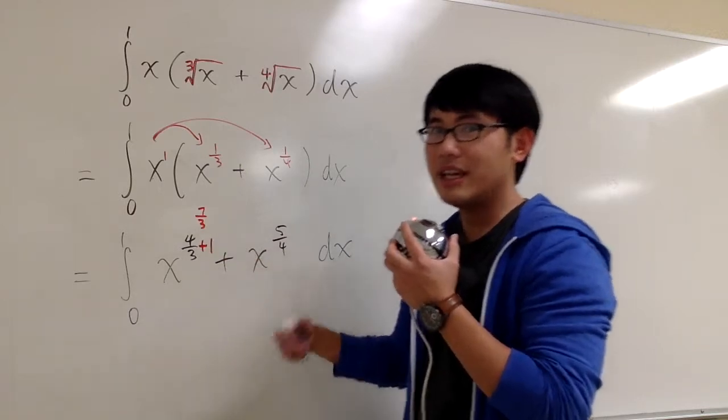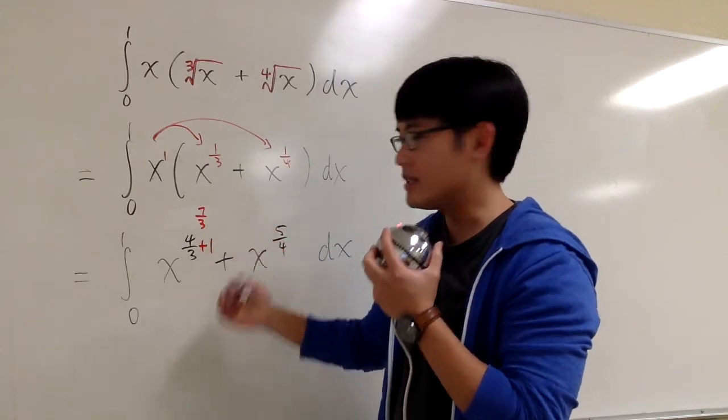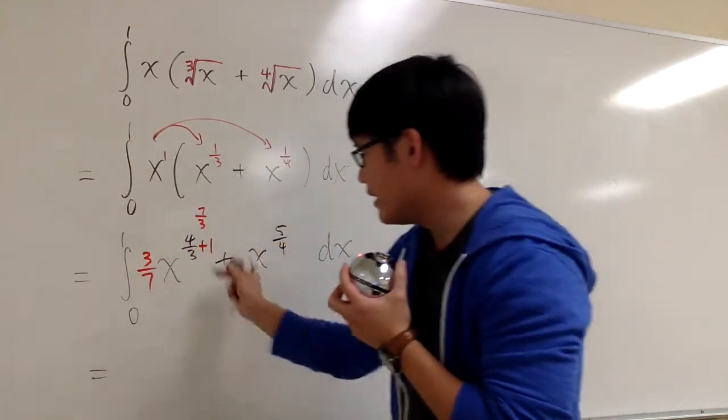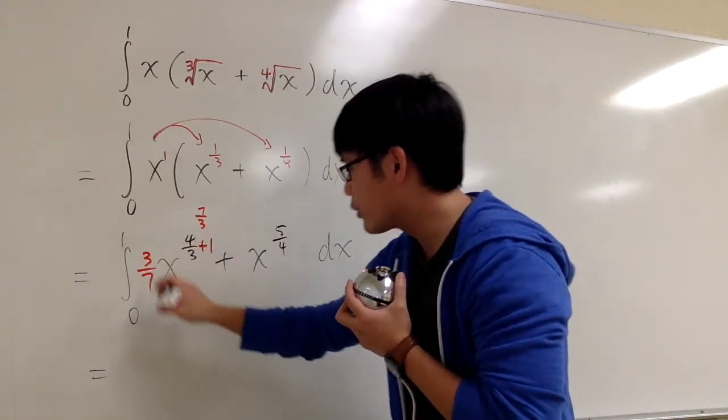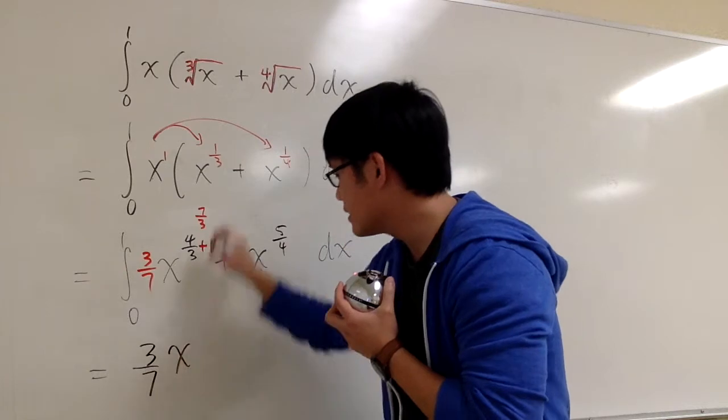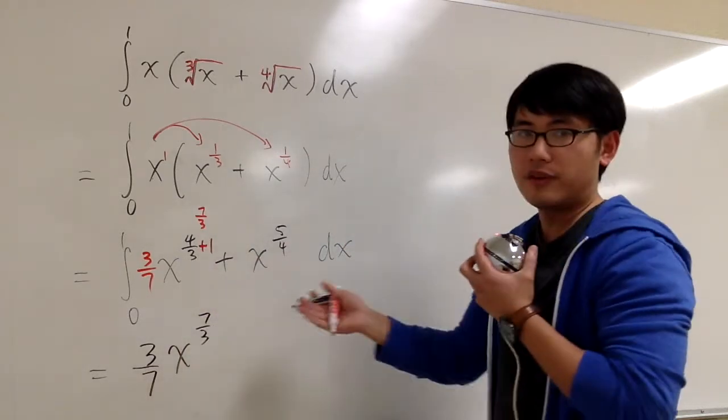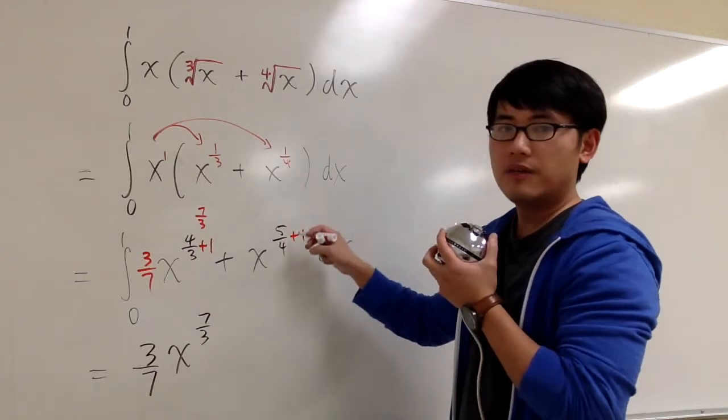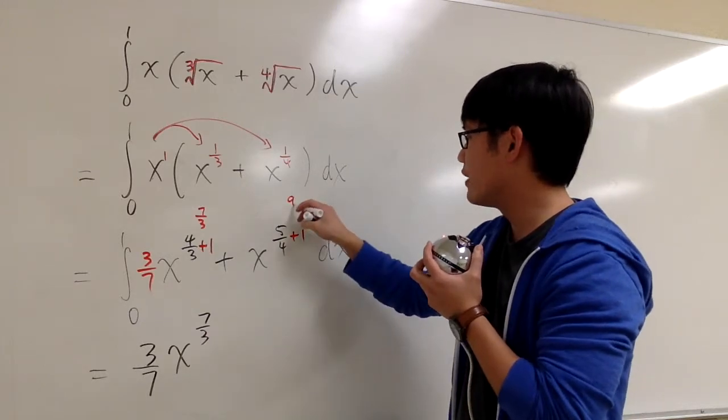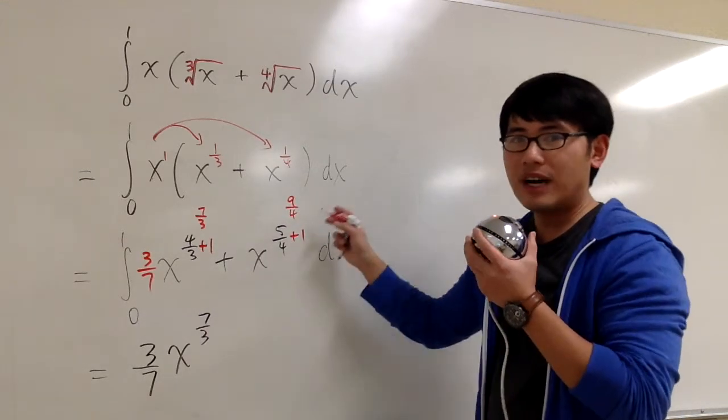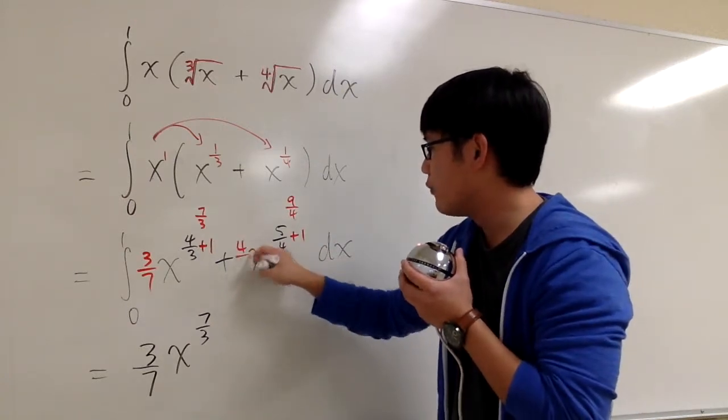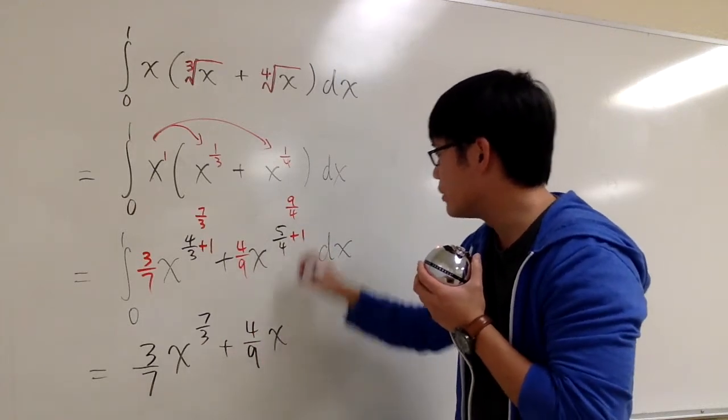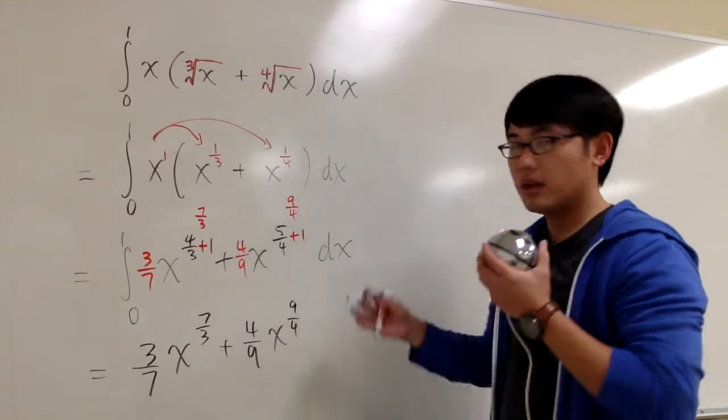And then what we have to do is divide it by 7 thirds, which is the same as multiplied by 3 over 7. And that's the first part. So for the antiderivative of x to the 4 thirds, we are going to have 3 over 7 x to the 7 over 3 for the first one. And for the second one, here we have 5 fourths. I add 1 to the exponent. 5 fourths plus 4 fourths gives us 9 fourths. And then we have to divide by the new exponent, which is the same as multiplied by 4 over 9. So we have plus 4 over 9 x to the 9 over 4.